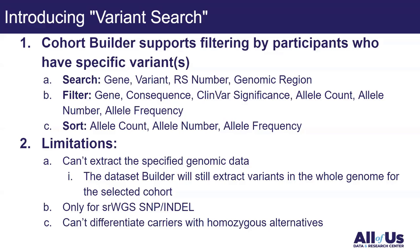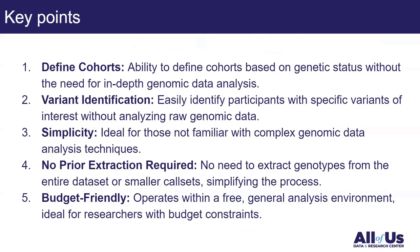Another limitation is that the tool cannot differentiate carriers from homozygous alternatives. This means that if a participant has one copy or two copies of the variant, both are classified the same way — the participant is considered to have that variant.